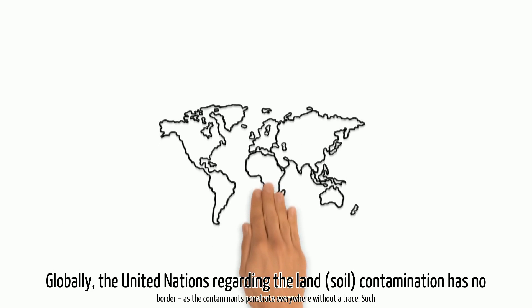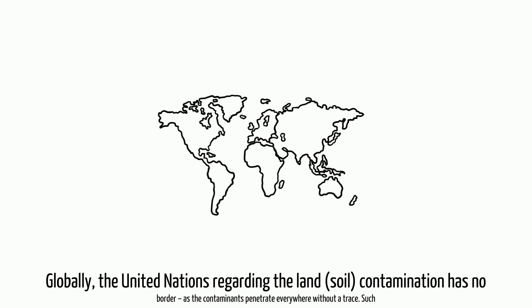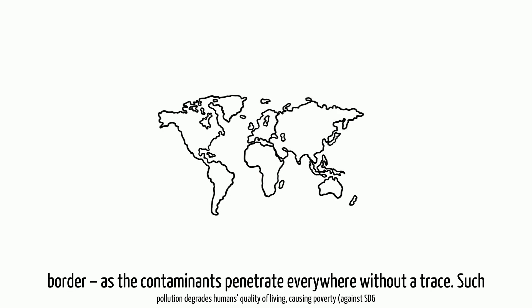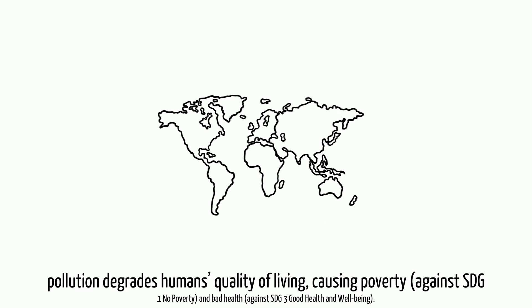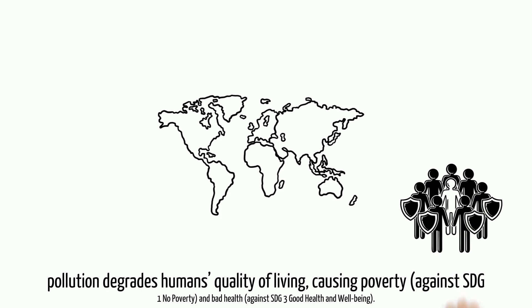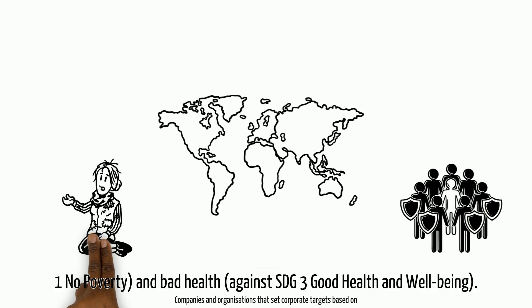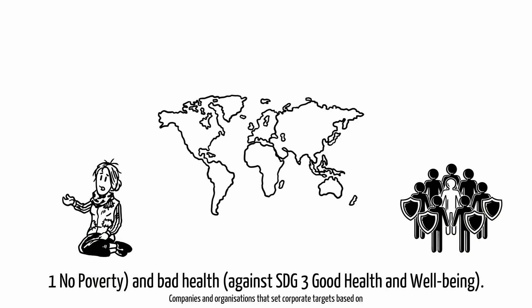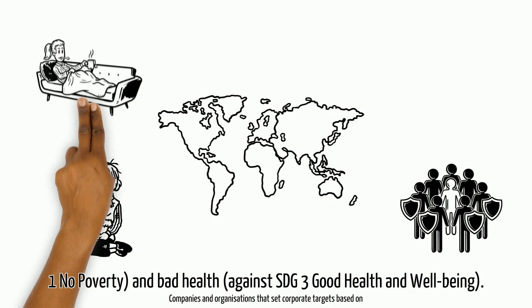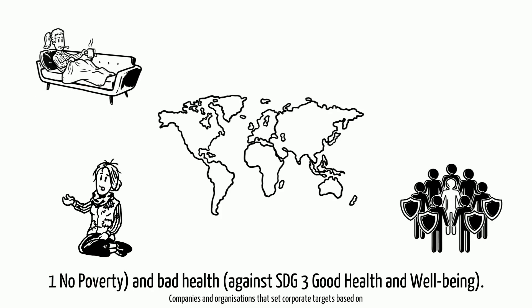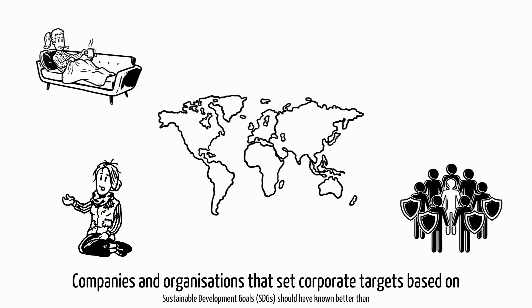Globally, the United Nations regards land and soil contamination as having no border, as the contaminants penetrate everywhere without a trace. Such pollution degrades humans' quality of living, causing poverty against SDG-1 and bad health against SDG-3 Good Health and Well-Being.